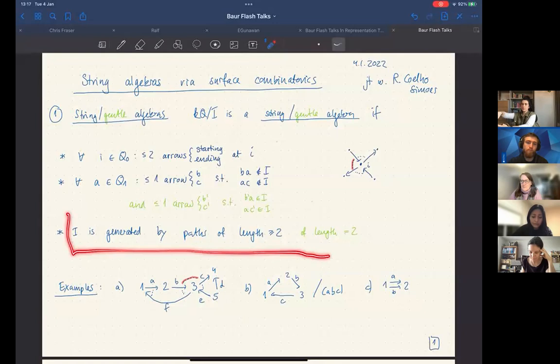And the last part is about the relations. So the ideal should be generated by paths at least of length two for string algebras and more restrictive if we look at gentle algebras we want them to be of length two.